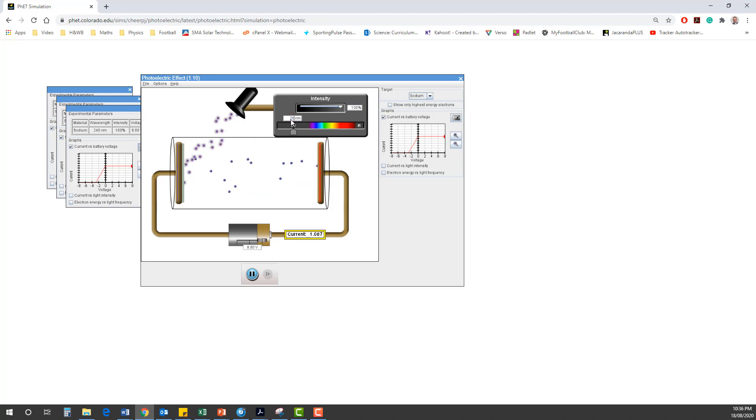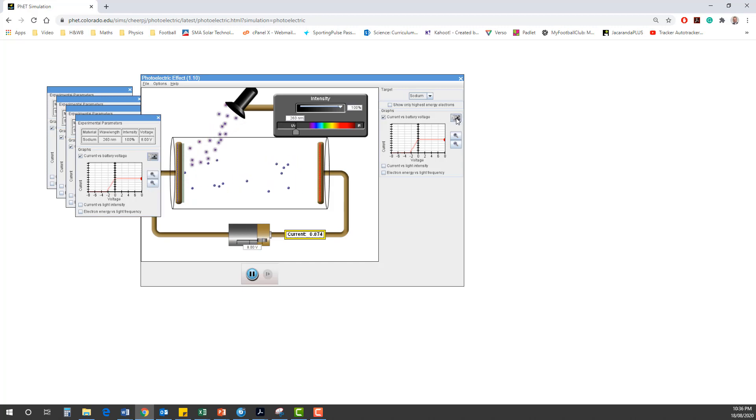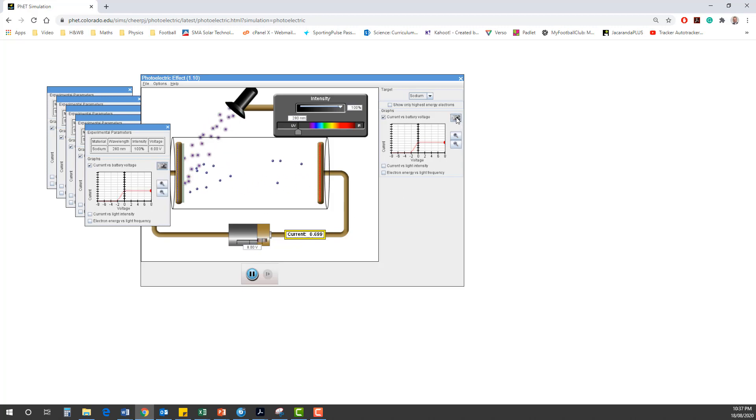We adjust that again to 260. We adjust our anode voltage left and right, take a picture. And finally, our final wavelength was 280 nanometers. And we adjust our electrode potential, our anode potential, and take a picture.